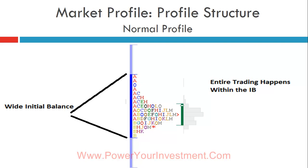This depends on volatility and beta — concepts Dalton and Peter missed in the literature. When the VIX is between 12–14 and the market is in a sleepy mode with a wide initial balance, you're better off staying out. But when the VIX is above 17–18 and the initial balance is wide, you need to pay attention because it can be disturbed later in the day. Volatility causes the initial balance to be breached more often; the same applies to beta.